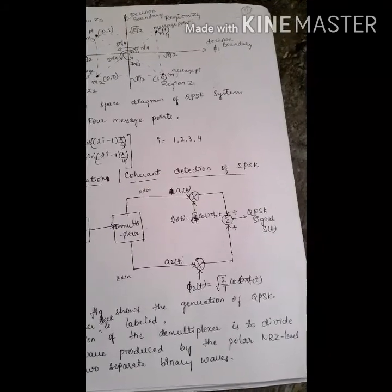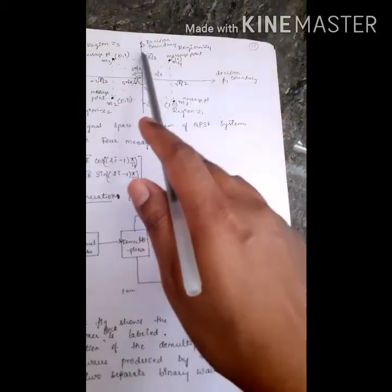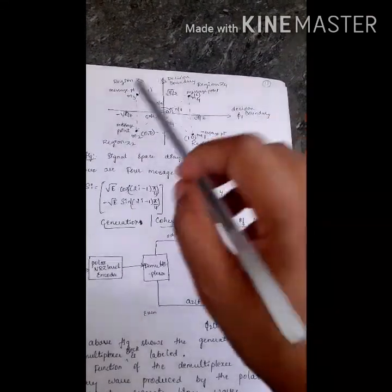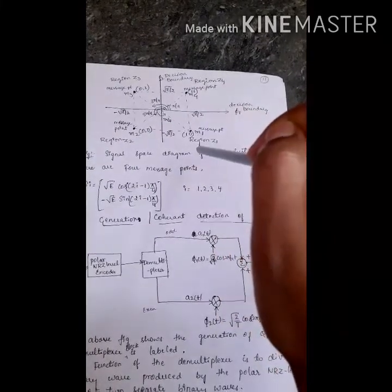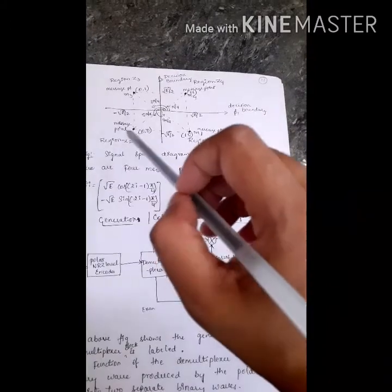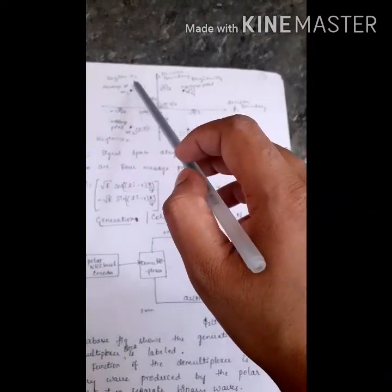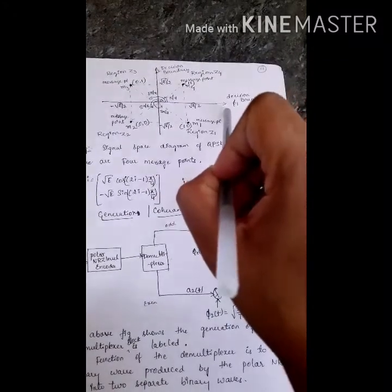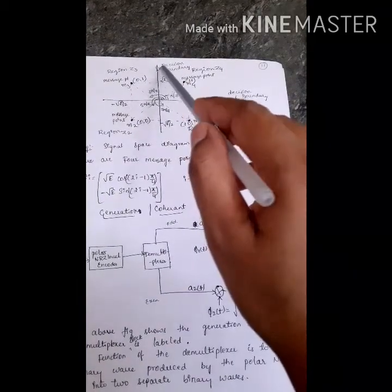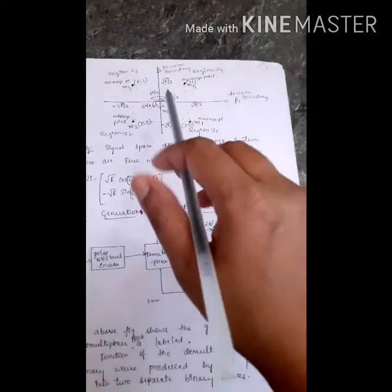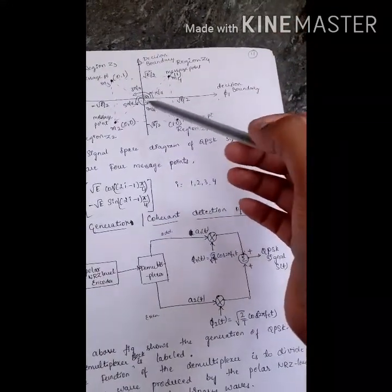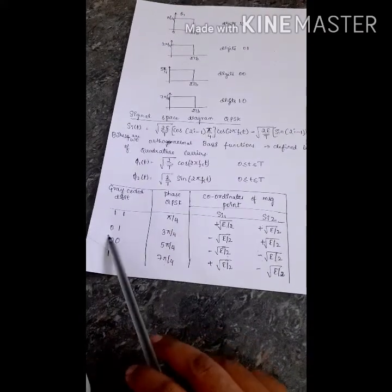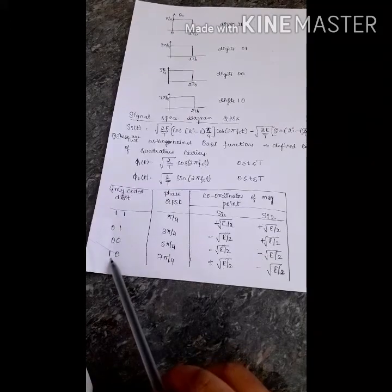Now consider the signal space diagram for the QPSK system. There are two decision boundaries: one along phi1 and one along phi2. There are four message points: M1, M2, M3, and M4, lying in regions Z1, Z2, Z3, and Z4 respectively. The mapping is: 11 corresponds to pi by 4, 01 corresponds to 3 pi by 4, 00 corresponds to 5 pi by 4, and 10 corresponds to 7 pi by 4.